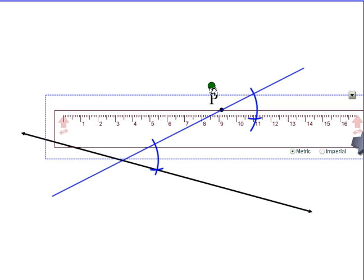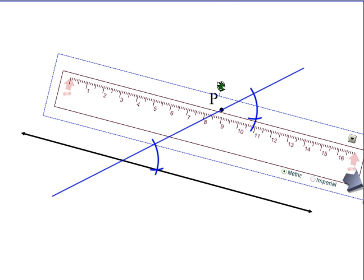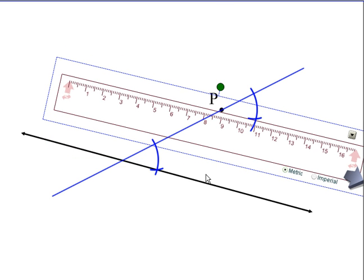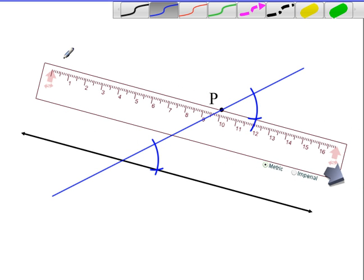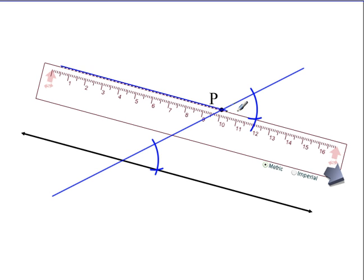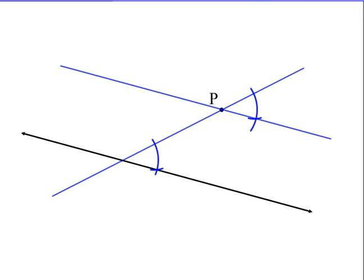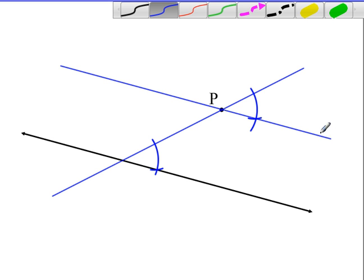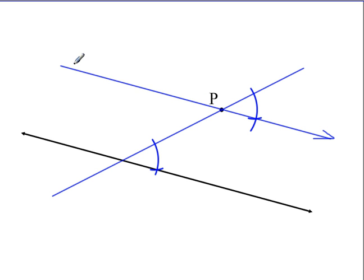So let's line up the ruler with my point P and the intersection of the arcs. Now that I have my straight edge lined up, I can draw my line. Go ahead and put arrowheads on my line here. This blue line is the desired line parallel to the given line through the given point.